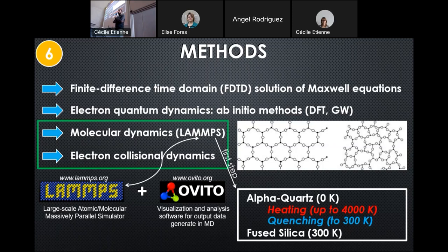In LAMMPS there is always a size factor, so we need to have at least a few thousand atoms to not have this size effect. We create the alpha structure, alpha-quartz, at zero Kelvin.